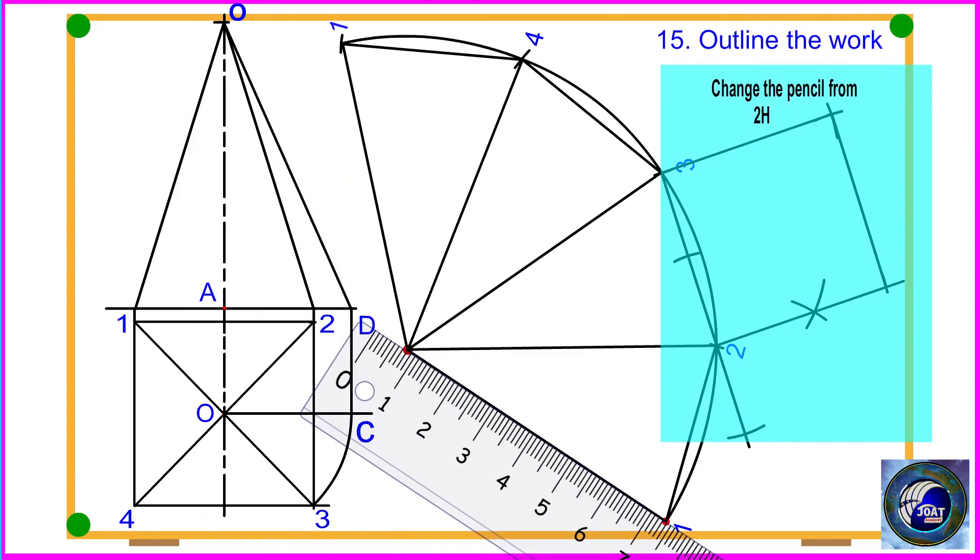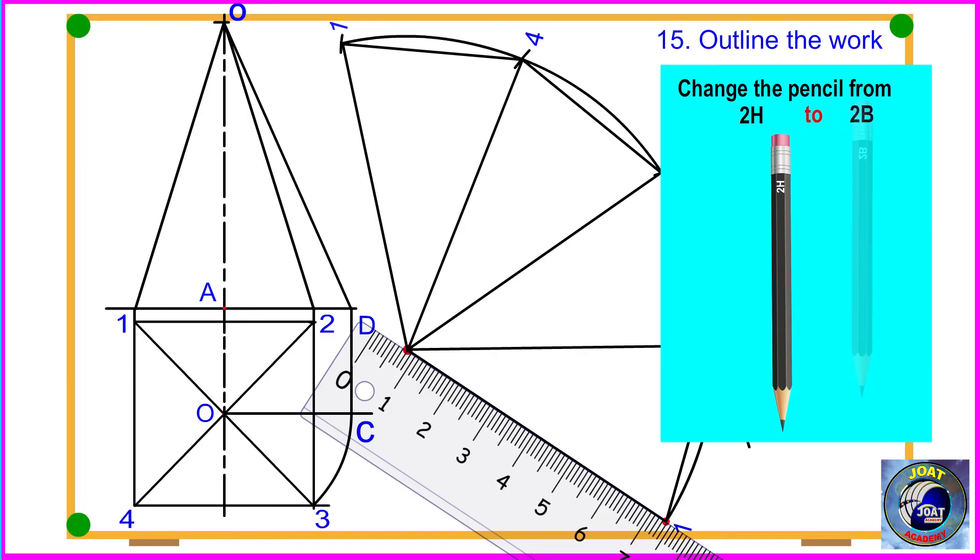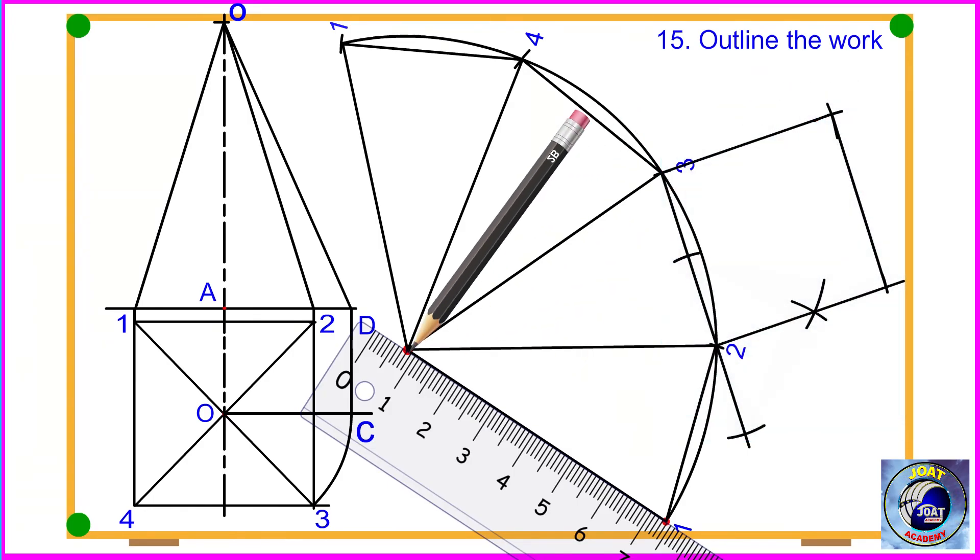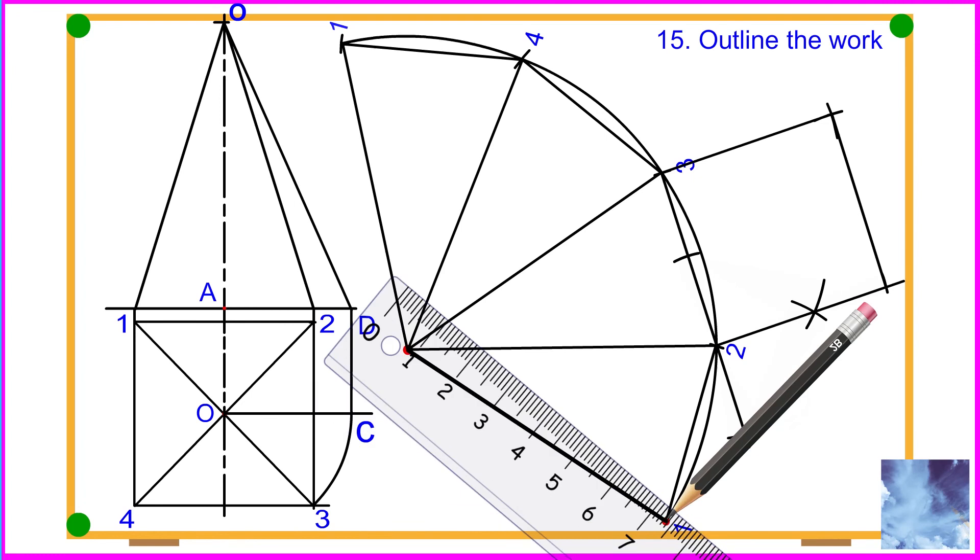Procedure 15: Outline the work. Change the pencil from 2H to 2B to outline the shape for better visibility. Outline both the outline and fold lines.